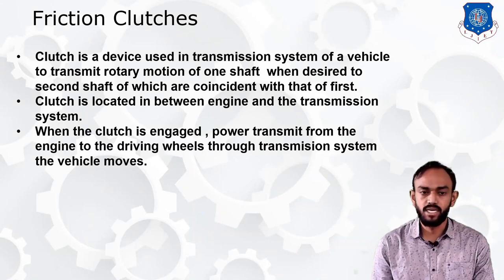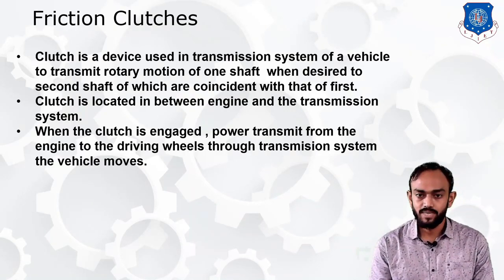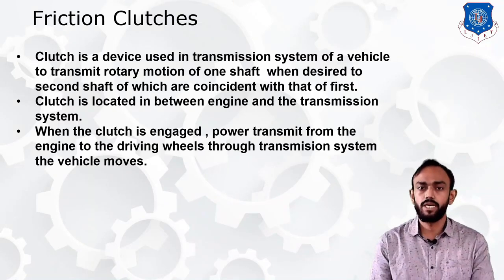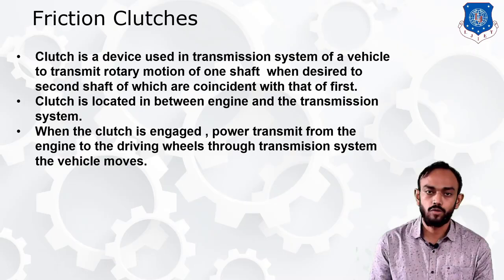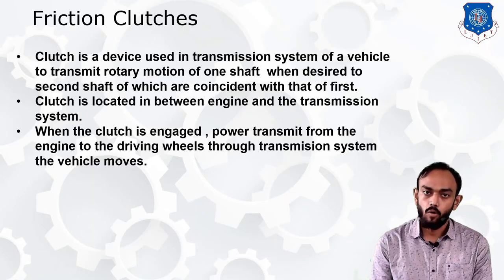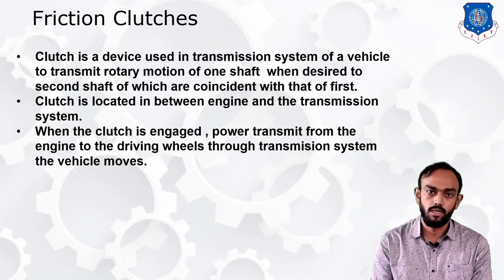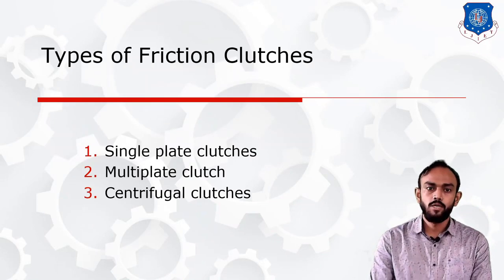The clutch is located between the engine and transmission system. When the clutch is engaged, power is transmitted from the engine to the driving wheels through the transmission system. But when we need to change gear, we apply force on the clutch pedal — it disengages, allowing us to change gear. When we release the pedal, the clutch engages and power transfers back to the driving wheel.